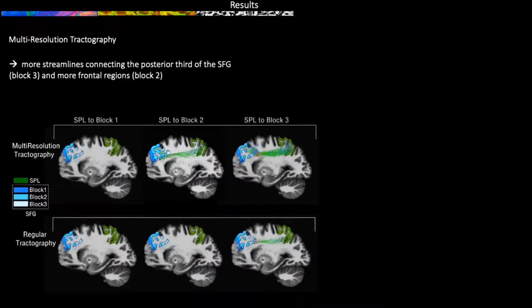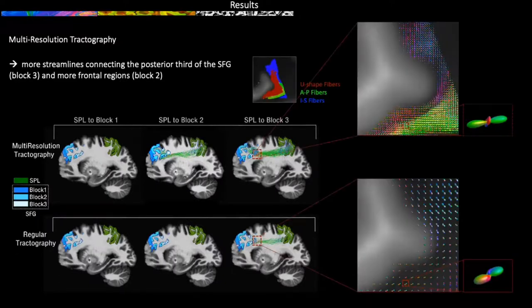Results show that more streamlines are reconstructed when using multi-resolution tractography compared to regular tractography, particularly more streamlines connecting the posterior third of the superior frontal gyrus and more frontal regions. And if we zoom in,